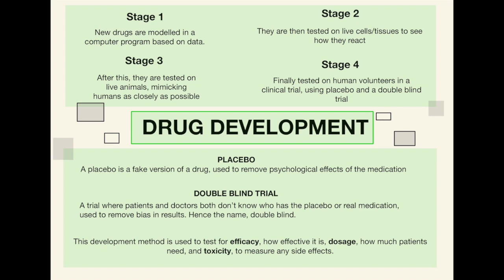A placebo is a fake version of a drug used to remove psychological effects of the medication. For example, you've got ten people in a room — you give five of them the actual medication and five of them a sweet that does absolutely nothing but looks and tastes the same. By doing this you remove psychological effects, because if someone who just took the sweet thinks they're better, that result would be meaningless. A double blind trial means both the patients and the doctors don't know who has the placebo or the real medication — this is purely to remove bias in the results.